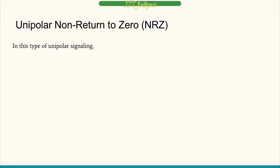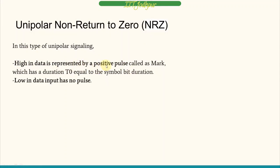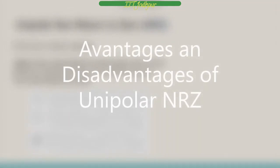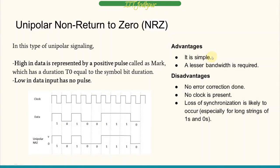First is unipolar non-return to zero. In this signaling, a high in the data is represented by a positive pulse and a low means no pulse. One is represented by a positive pulse at +V volts, and zero means no pulse is passed. The main advantage is it is fairly simple and requires very little bandwidth. The main disadvantage is no error detection is possible, no clock is present, and loss of synchronization is likely especially with a continuous long string of ones or zeros.